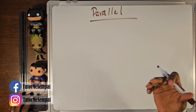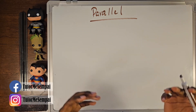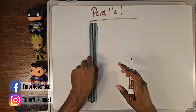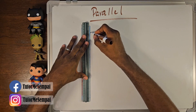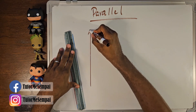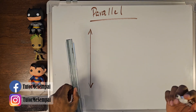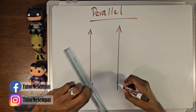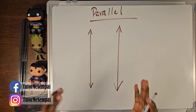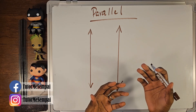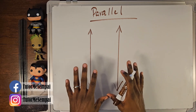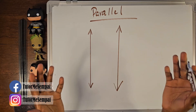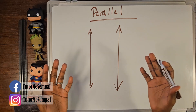Now that we know what a line is, what is a parallel line? What makes lines parallel? Well, first you're going to need more than one line — you need two lines. I'm going to use a ruler to make sure I have straight lines, and of course we need our arrows. So there we have two lines. How do we know if we're going to have parallel lines or not? The thing that makes two lines parallel is if they would ever touch. If lines touch, they're not parallel. If they don't touch, they are parallel.